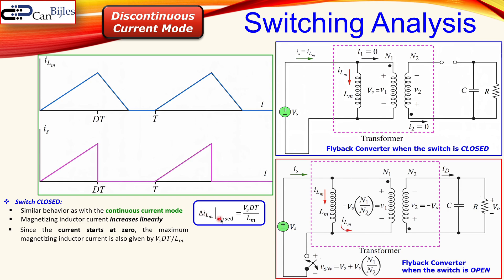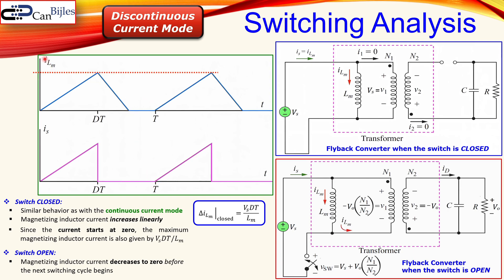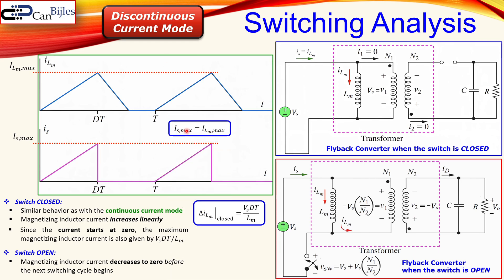The delta-iLm is also our maximum current in this case. When the switch is open, the magnetizing inductor decreases to zero before the next switching cycle begins — that is the defining characteristic of discontinuous current mode. The maximum value of the inductor current and the maximum source current are equal: i_source_max equals iLm_max, and this equals delta-iLm.